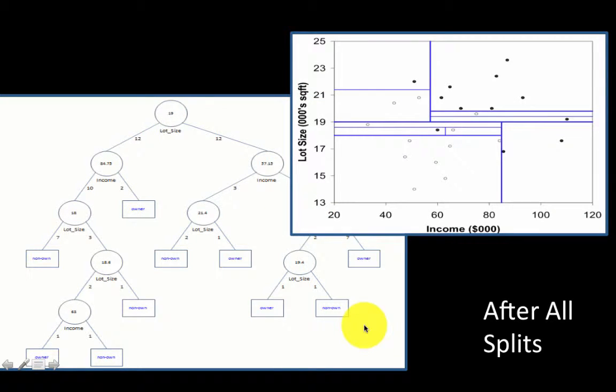Of course, we can do the corresponding equivalence with respect to our original diagram. Because every split results in one line being drawn on a given region, this is after all the splits were performed. Here we've got a leaf node—which region does it correspond to? This says the lot size is less than or equal to 19, so we are talking about this lower half of the diagram. Then it says the income is greater than or equal to 87.5, so this is the region that corresponds to this node.